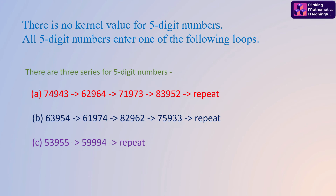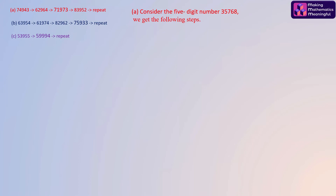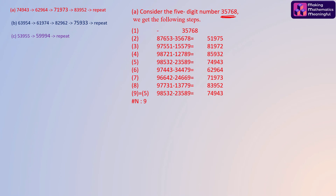For five-digit numbers there is no kernel value and they enter one of three different loops. Consider the first possibility: I have chosen the number 35768. Observe that after nine steps it matches with the fifth step, number 74943, so a loop is formed — this matches case A.